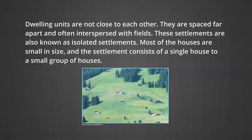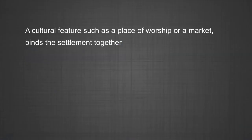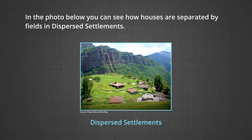In dispersed settlements, dwelling units are not close to each other. They are spaced far apart and often interspersed with fields, and are also known as isolated settlements. Most of the houses are small in size, ranging from a single house to a group of houses, and the settlement is scattered over a vast area without any specific pattern. A cultural feature such as a place of worship or a market binds the settlement together.